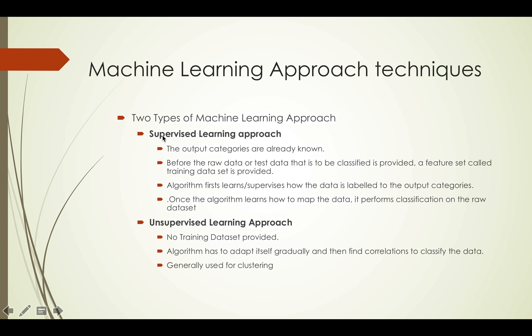The two types of machine learning approaches is supervised learning approach and unsupervised learning approach. In supervised learning approach, the output categories are already known. Before the raw data or test data that is to be classified is provided, a feature set called training dataset is provided. The algorithm first learns how the data is labeled to the output categories. Once the algorithm learns how to map the data,